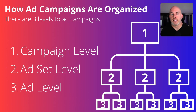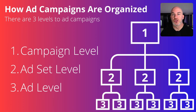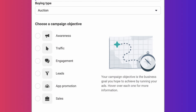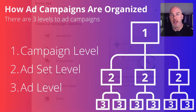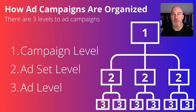So how exactly are campaigns organized on the Facebook platform? When you're going to create your ads, it's important to understand this structure — there is a hierarchy here. There are three levels or three pillars to consider. The first is called the campaign level, and that's where you're basically choosing what type of campaign this is and what the overall goal of the campaign is.